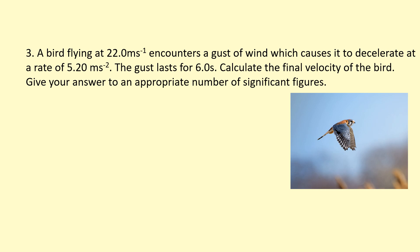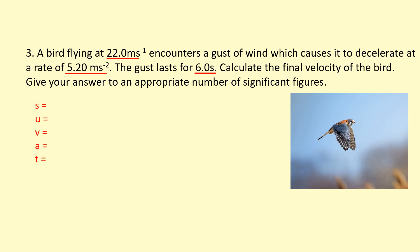Final example: a bird flying at 22 m/s encounters a gust of wind causing it to decelerate at 5.20 m/s². Because it's a deceleration, the acceleration is negative: a = −5.20 m/s². The initial speed u = 22 m/s, and the gust lasts for t = 6.0 s. I'll organize this using SUVAT: s (displacement) — unknown and not needed; u = 22 m/s; v = ? (what we want); a = −5.20 m/s²; t = 6 s.